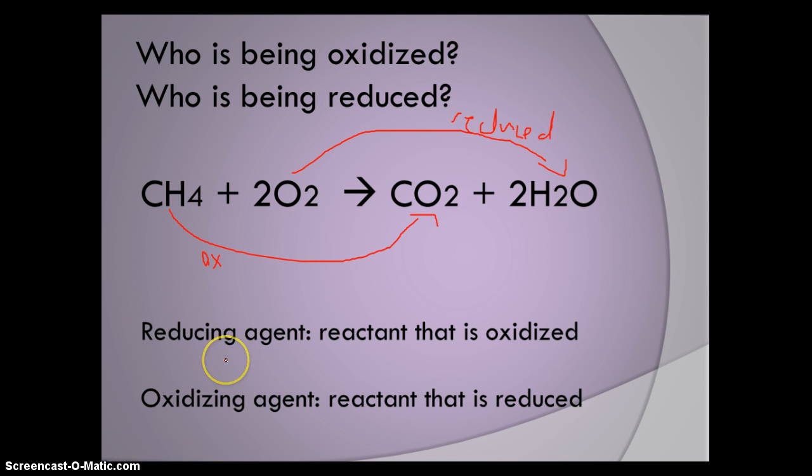The vocabulary words below used to be really important, but they're not as important now. The reducing agent is the reactant that is oxidized. CH4 was oxidized because it lost its hydrogens, but it is the reducing agent. Oxygen was reduced because it gained hydrogen and became water, and it is the oxidizing agent. The reducing agent is the thing that does the oxidizing, or the reactant that has been oxidized.